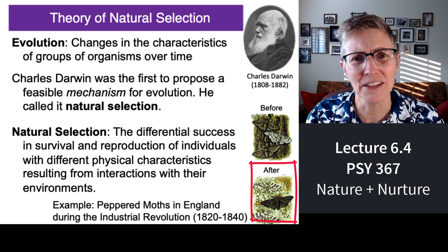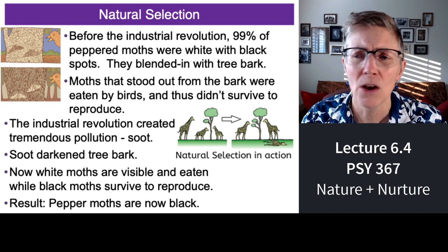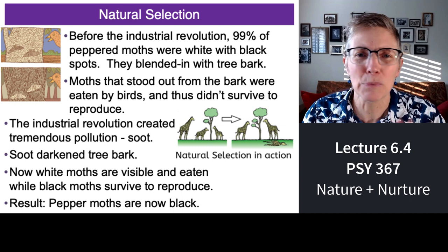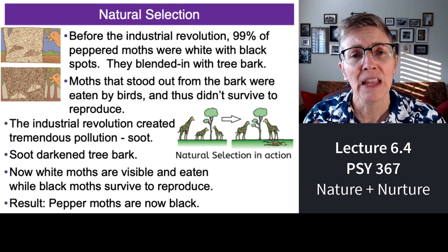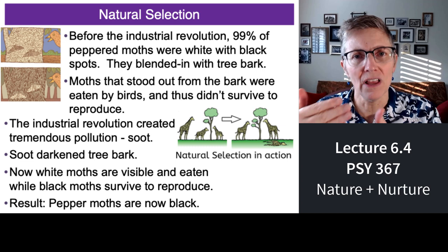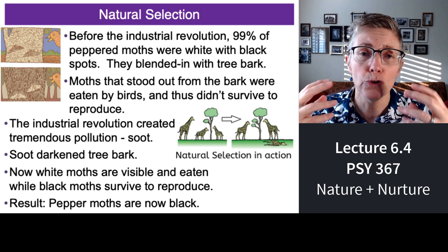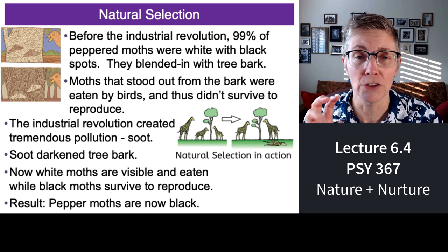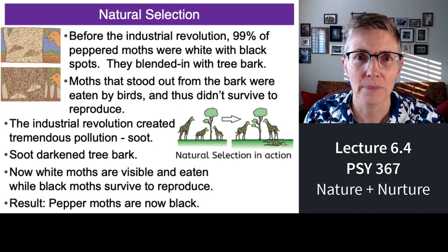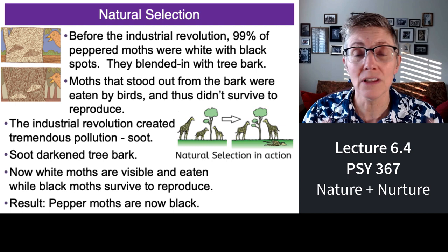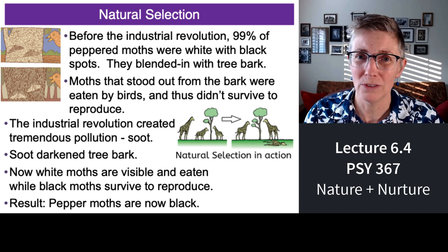Why did the peppered moth evolve away from the description that its name had? Well, before the Industrial Revolution, 99% of peppered moths were white and they blended in with the trees. Any dark moths stood out — there was a lot more contrast between dark moths and the trees. So if you didn't blend in with the trees, birds would come along and eat you. If you stood out on the tree, it's like waving a big sign to a bird saying come eat me.